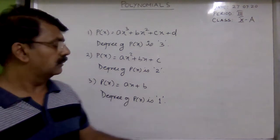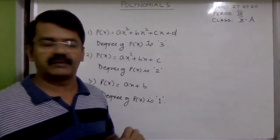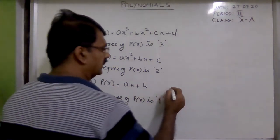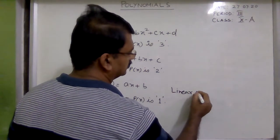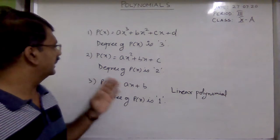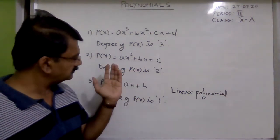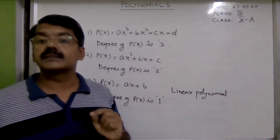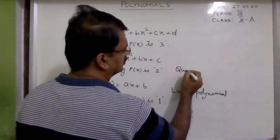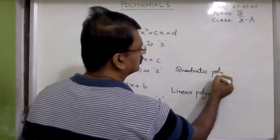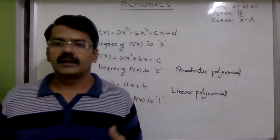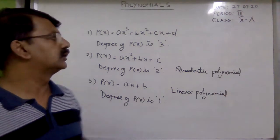Although 'poly' means it can have any degree, a polynomial with degree 1 is called a linear polynomial. A polynomial with degree 2 is called a quadratic polynomial. And a polynomial with degree 3 is called a cubic polynomial.